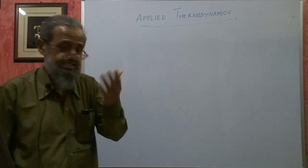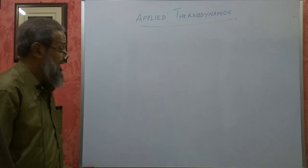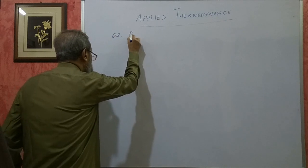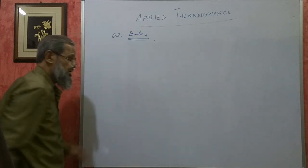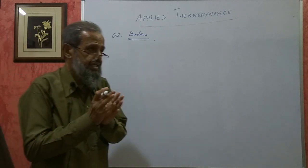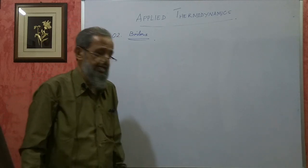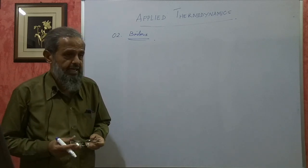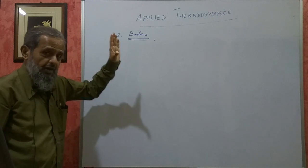Now I am going to start the second unit of applied thermodynamics of fifth semester. The second unit is about boilers, boiler mountings, accessories, etc. In this unit you are not going to get any numericals — the syllabus does not describe any numericals in this particular chapter. So it is only theory, but you will get around 20-25 marks of theory in this particular chapter. So you have to be prepared for that.